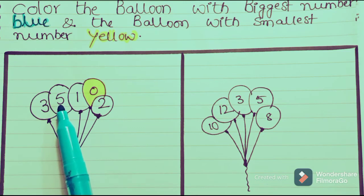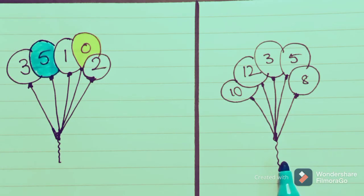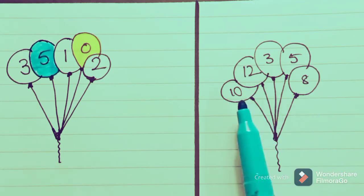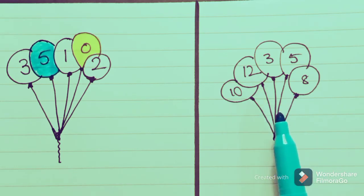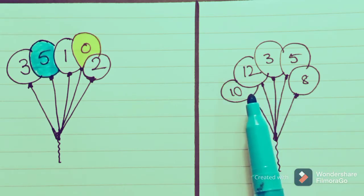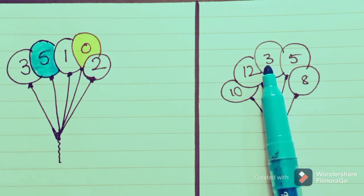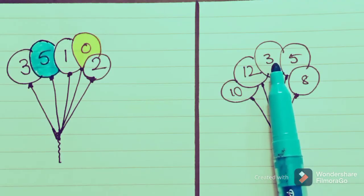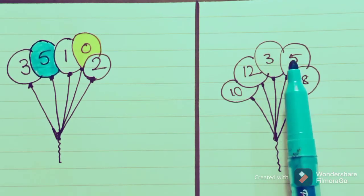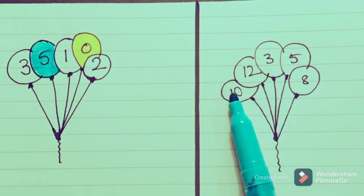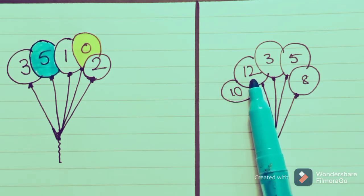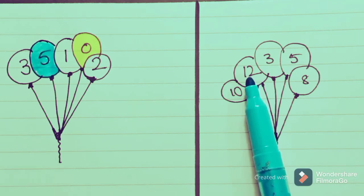Now let us see the next group of balloons. Which one is the smallest number here? The number which comes earlier is 3, so 3 is the smallest number. After 3, 5 comes; after 5, 8 comes; after 8, 10 comes; and after 10, 12 comes. So 12 is the biggest number — we should color this 12 balloon in blue.